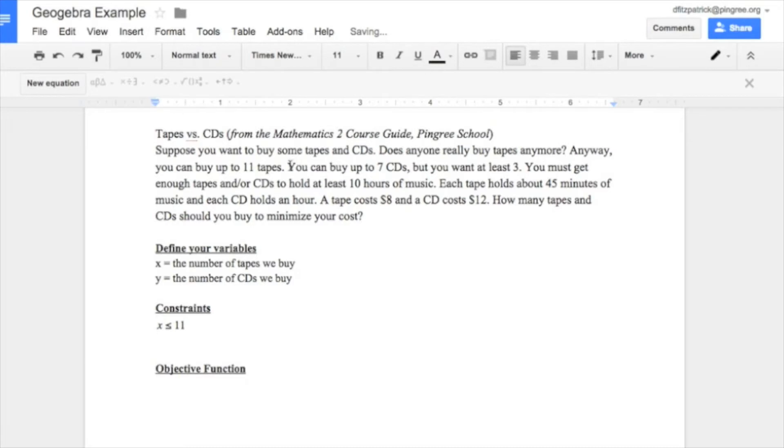Now we can go on to our next one, which is going to be a compound inequality about the CDs. So we're going to say that we must have at least 3 CDs, 3 less than or equal to y, which is less than or equal to 7.